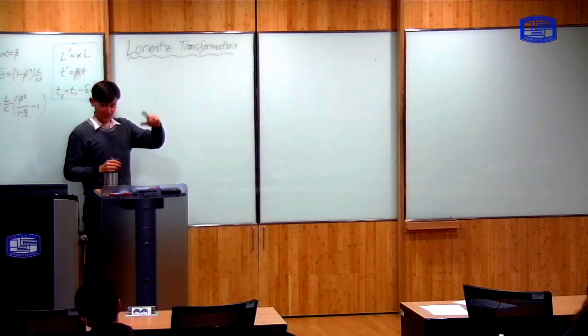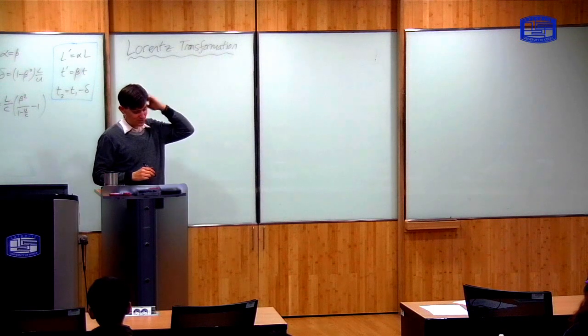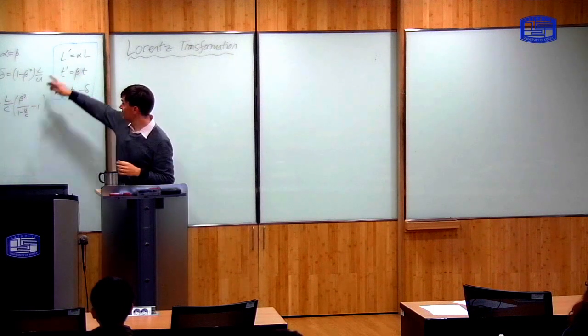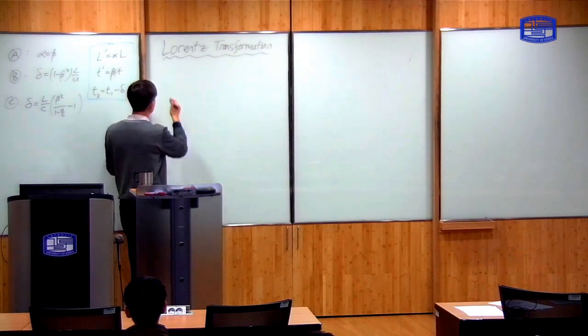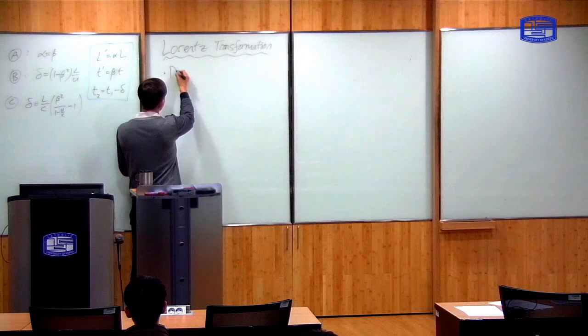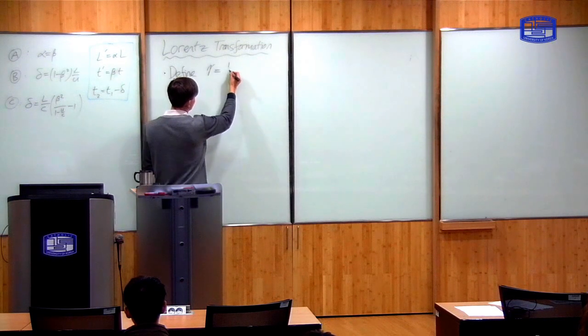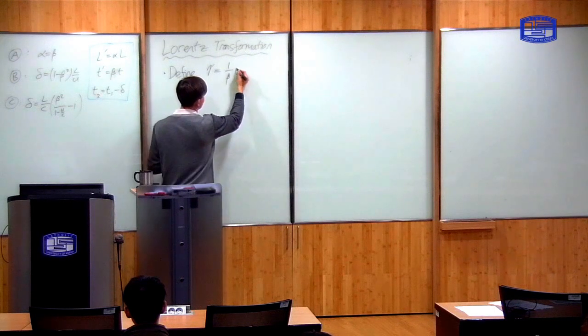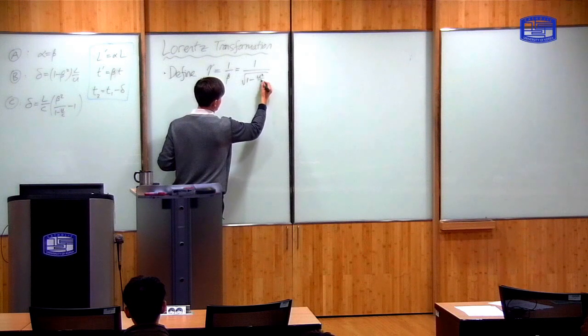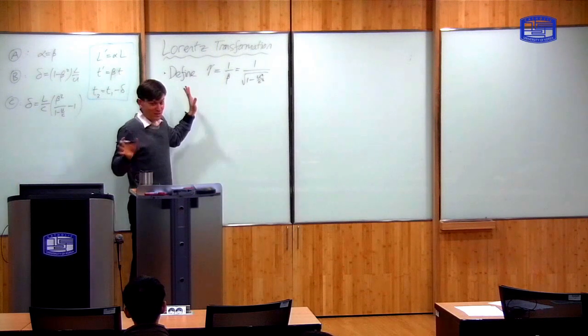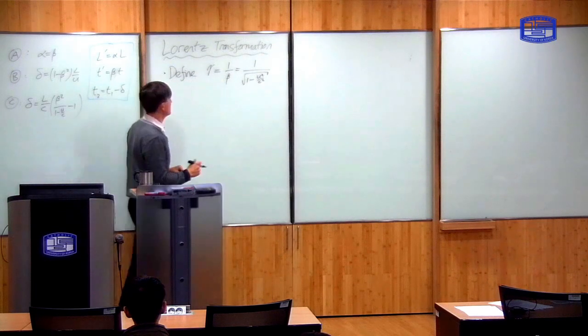So this is the transformation of space and time coordinates between different observers, once you take into account these effects with the correct values of alpha, beta, and delta. Before I do that, it's useful to define the following constant, gamma, which is equal to 1 over beta, which is equal to 1 over the square root of 1 minus u squared over c squared. That's just a definition which is used a lot in special relativity.